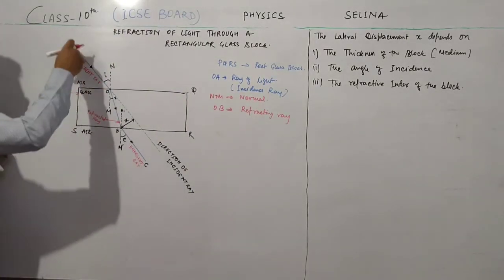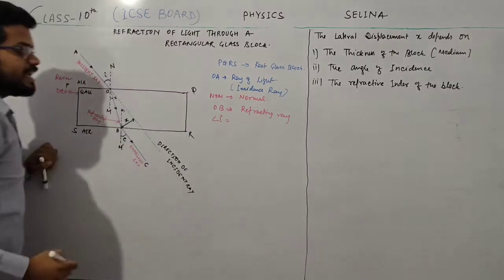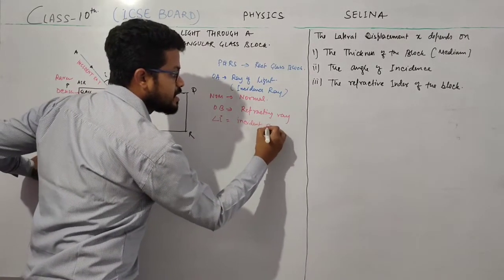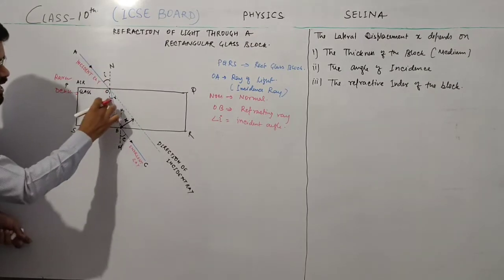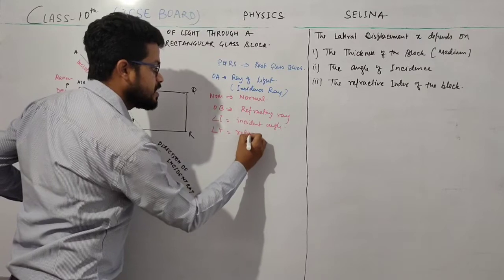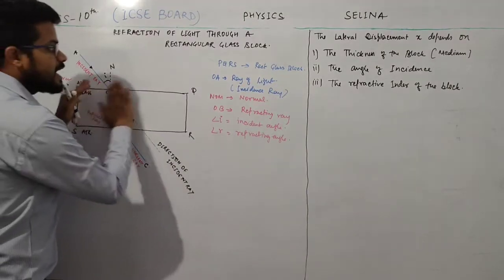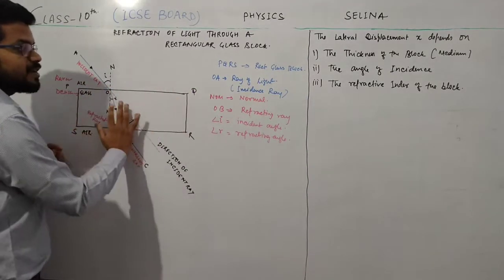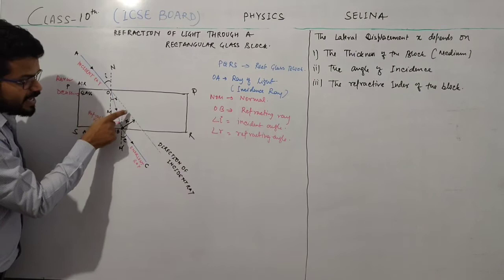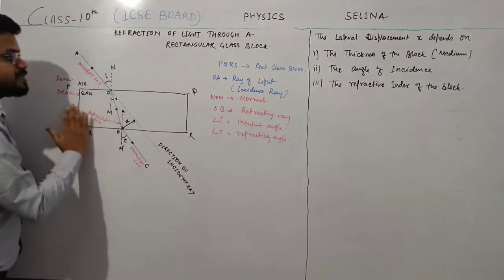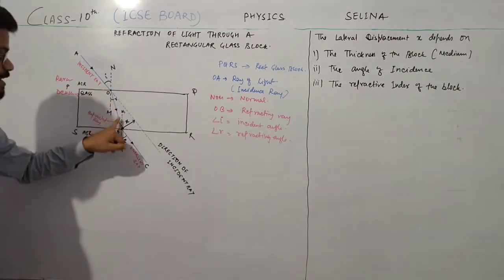The incident ray OA strikes surface PQ making an angle I, which is the angle of incidence. After refraction, it travels in direction OB making angle R, which is the refracting angle. If this glass block were not present, the incident ray would continue in the direction of the green dashed line.